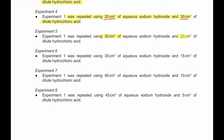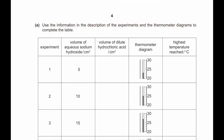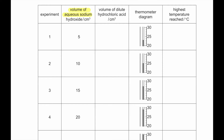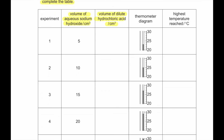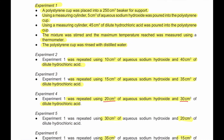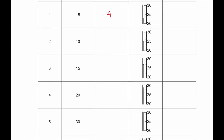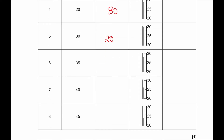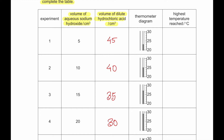The volumes used were: 30 and 20, 35 and 15, 40 and 10, 45 and 5. Use the information and the thermometer diagrams to complete the table. The volume of aqueous sodium hydroxide is already given, so we complete the volume of dilute hydrochloric acid so that each pair adds up to 50. The highest temperature reached in the first experiment reads 23 degrees Celsius, the next reads 25.